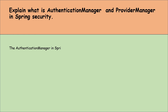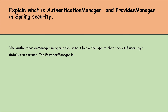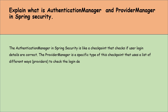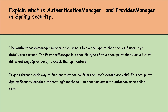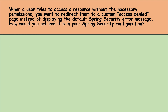Explain what AuthenticationManager and ProviderManager are in Spring Security. The AuthenticationManager in Spring Security is like a checkpoint that verifies if user login details are correct. The ProviderManager is a specific type of AuthenticationManager that uses a list of different authentication providers to check login details. It goes through each provider to find one that can confirm the user's details are valid. This setup lets Spring Security handle different login methods, like checking against a database or an online service, making sure the user is who they say they are.